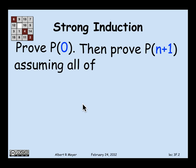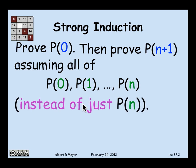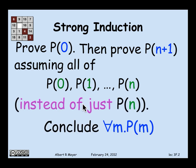with strong induction, you can assume not just P(n), but you can assume P(0), P(1), all of the properties, that all the numbers up through n have the property. And from this, of course, you could conclude that everything has the property, that for all n, P(n).